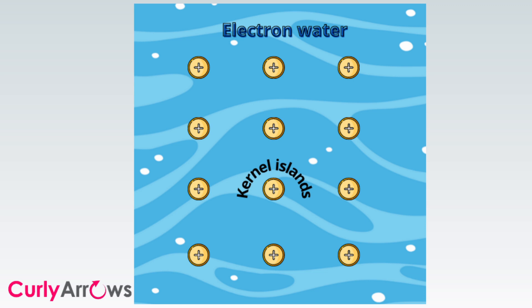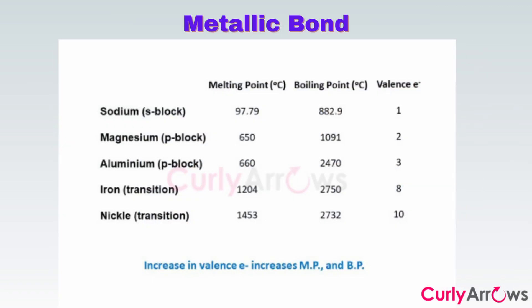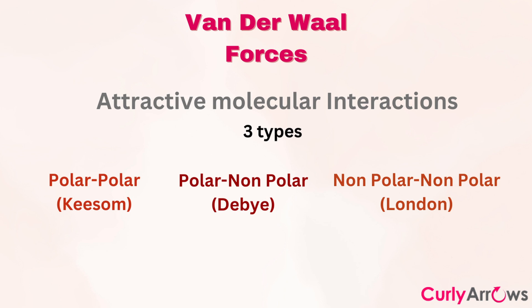The metallic bond strength of 68 to 800 kJ per mole lies between covalent and van der Waals strength. The metals have high melting and boiling points. Van der Waals forces are intermolecular forces of attraction occurring between covalent molecules.